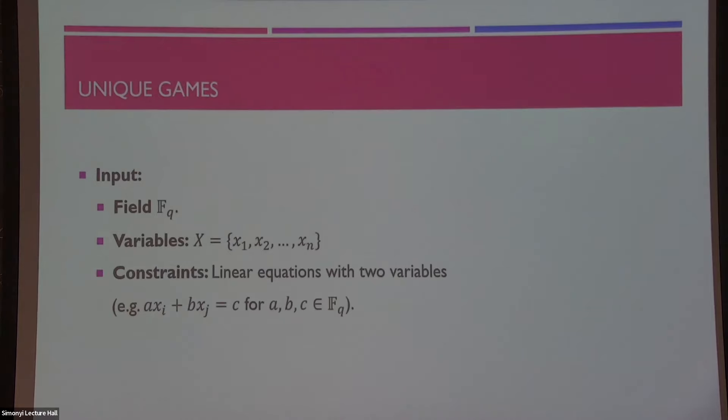This is just a CSP where we take as input some finite field FsQ, a bunch of variables, and now our constraints are just going to be these linear equations where every equation contains exactly two variables. So, very simple linear equations. Our goal, find an assignment for the variables to the input field that will satisfy as many of these equations as possible.